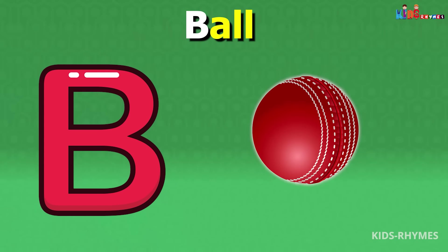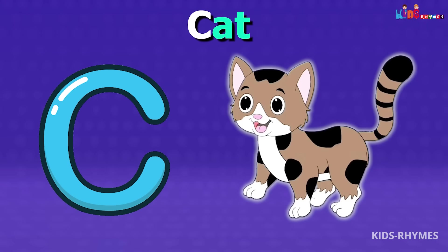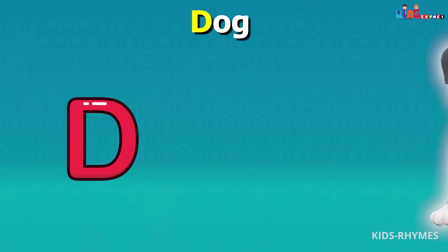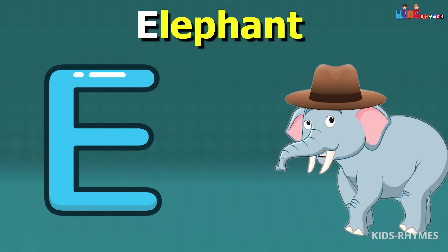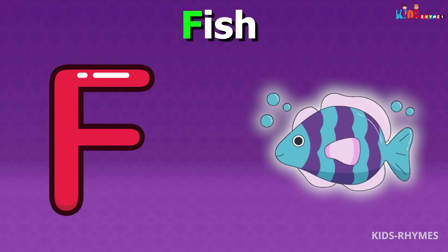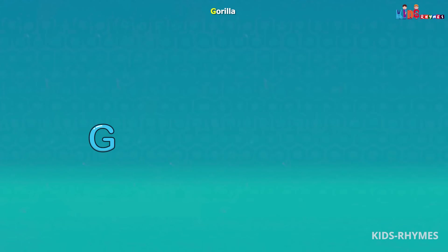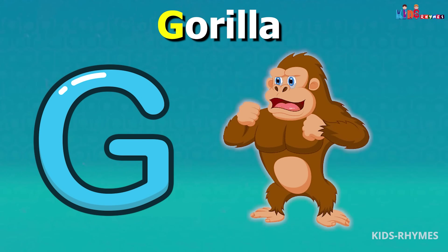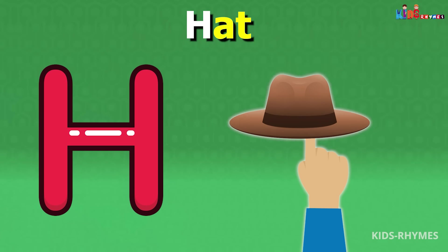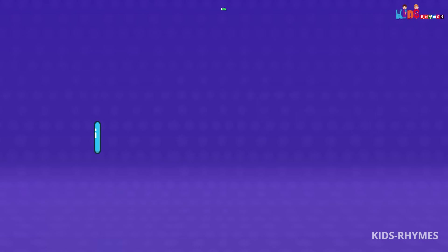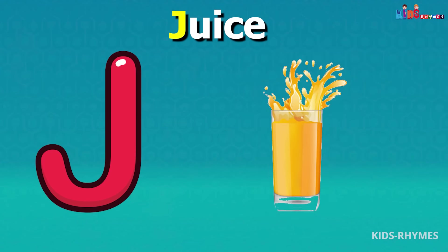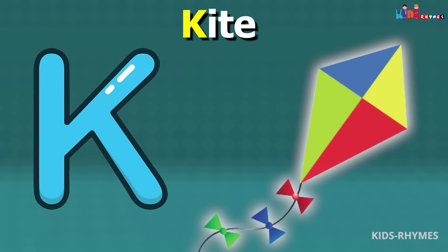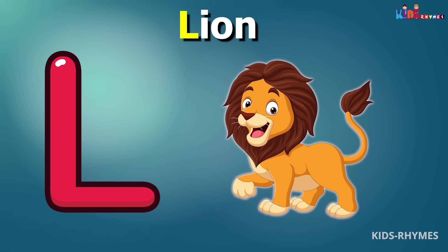D for dog, E for elephant, F for fish, G for gorilla, H for hat, I for ink, J for jewel, K for kite, L for lion.